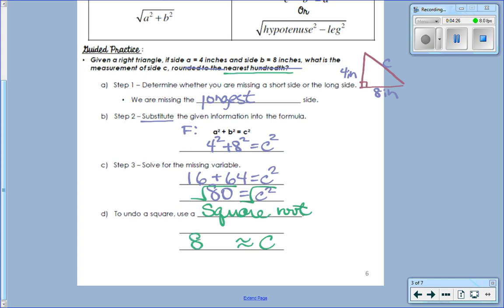In your calculator, square root of 80: 8.9. And what is our longest side? It's greater than 8? Very good. Questions?